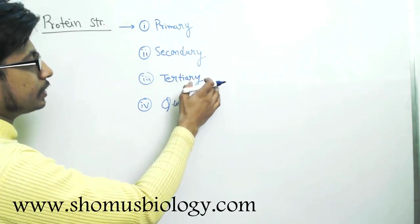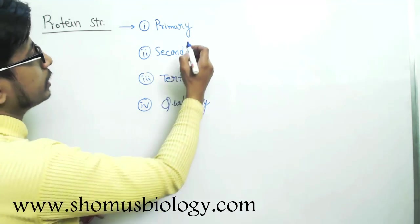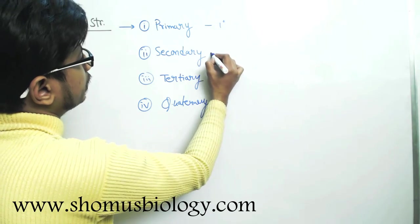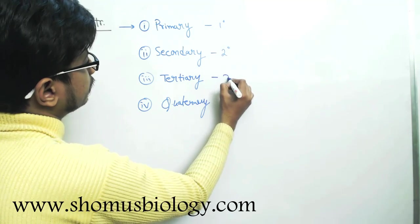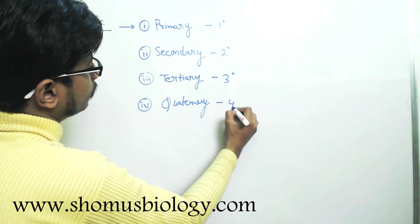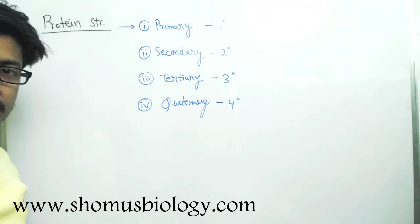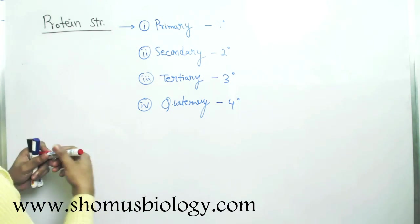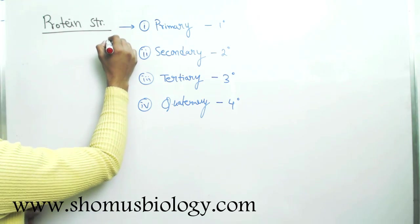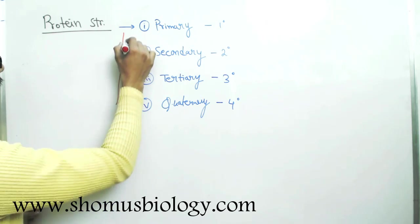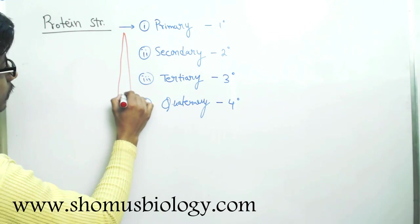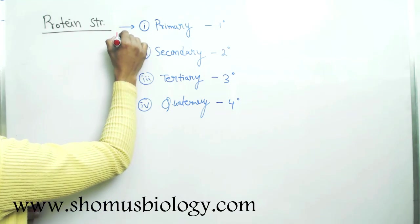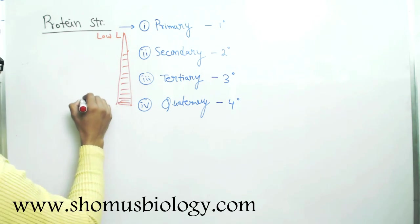Then the third part, a little more complex, tertiary, and the fourth one is quaternary. Primary, secondary, tertiary, and quaternary, or we can also say primary is first degree, secondary is second degree, tertiary is third degree, and quaternary is fourth degree. The complexity from low to high protein complexity.